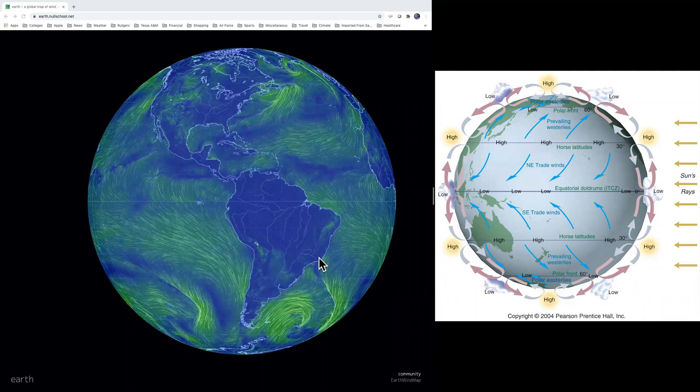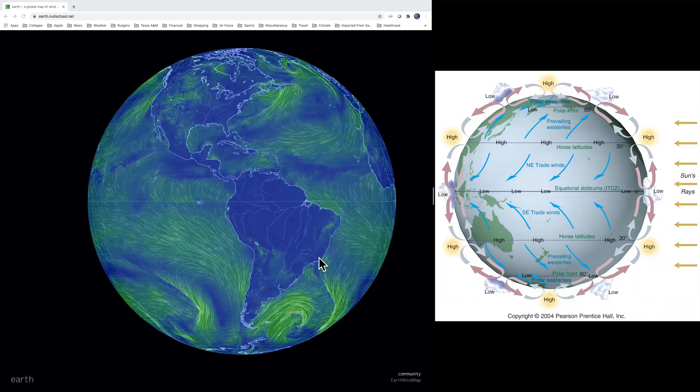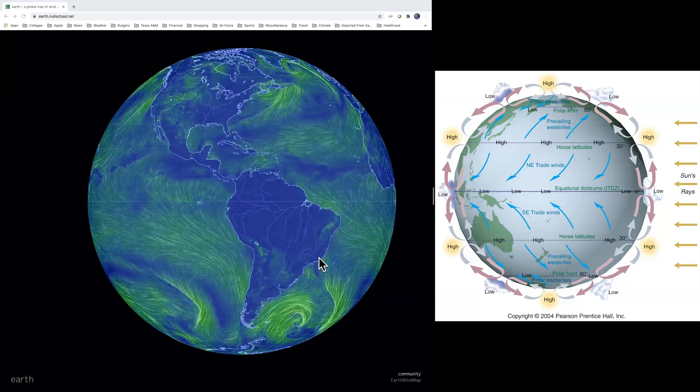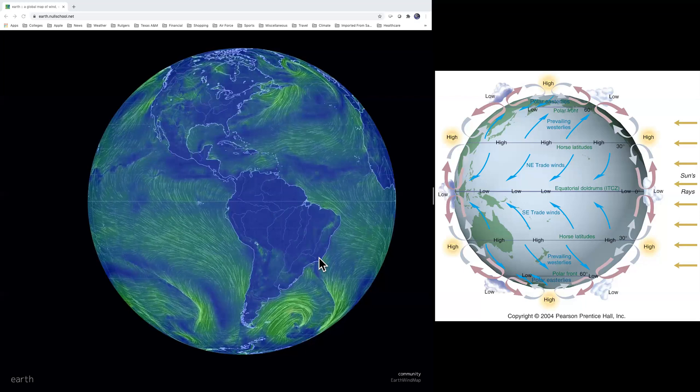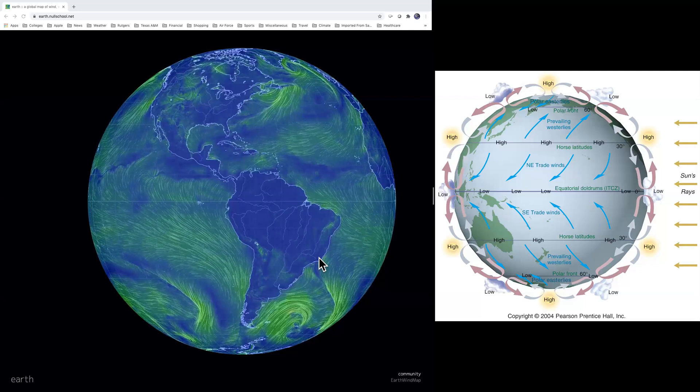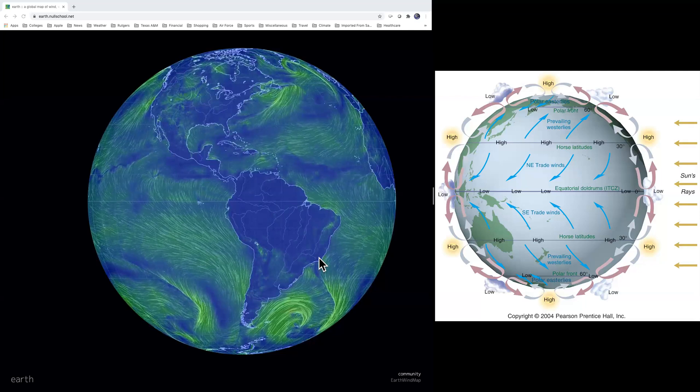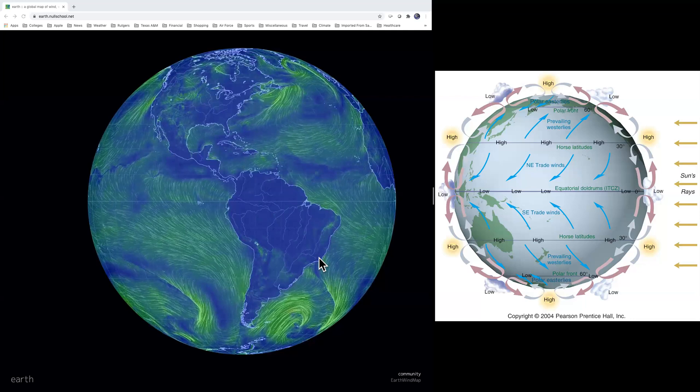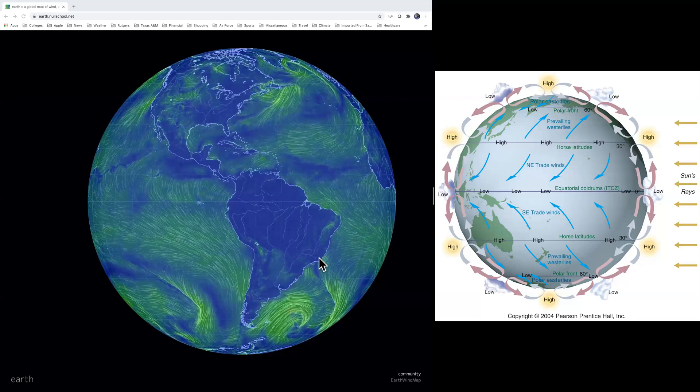and if you recall from week one, models are ways of taking something complicated and simplifying it, making it easier to digest. The global circulation of the earth is super complicated. It is all physics and math, and it's not linear math either. So it's very complicated stuff.